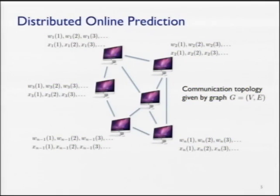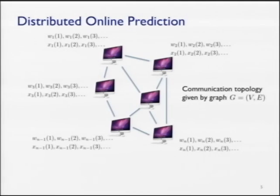Now what is distributed online prediction? The previous framework was sequential: one processor receiving observations and making predictions. But if the rate at which predictions need to be made is faster than a serial processor can handle, that motivates going to a parallel or distributed setting. Now the problem formulation has a network of processors, each receiving its own stream of observations X sub i at node i and making predictions, suffering loss accordingly.